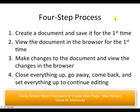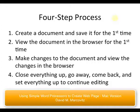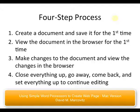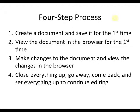This video will show the four-step process for creating simple web pages with a simple word processor. The four-step process starts with step one where we create a document and save it for the first time, then step two where we view the document in the browser for the first time, then step three where we make changes to the document and view the changes in the browser, and then step four where we close up everything, go away, come back, and set everything up to continue editing.